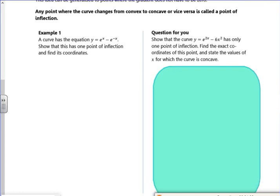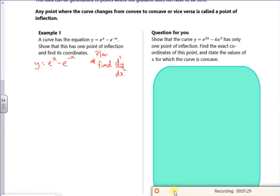So I've got y = e^x - e^(-x). So I'm going to differentiate it twice, so I'm going to find d²y/dx². In terms of a plan, I'm going to find d²y/dx².